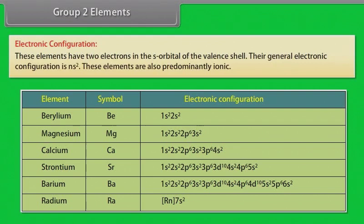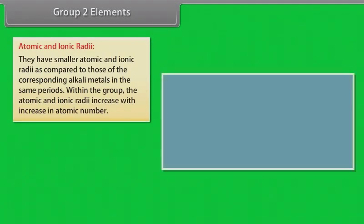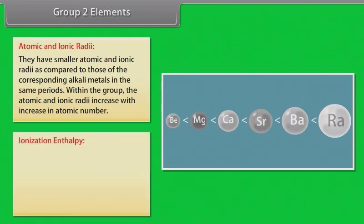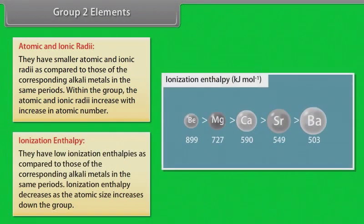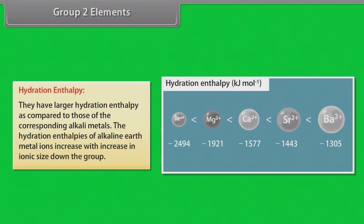Group 2 elements. These elements have two electrons in the S-orbital of the valence shell. Their general electronic configuration is NS². These elements are predominantly ionic. They have smaller atomic and ionic radii compared to the corresponding alkali metals in the same periods. Within the group, atomic and ionic radii increase with increase in atomic number. They have low ionization enthalpies compared to the corresponding alkali metals, and ionization enthalpy decreases as atomic size increases down the group. They have larger hydration enthalpies compared to the corresponding alkali metals.